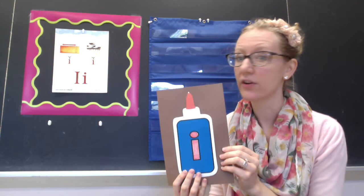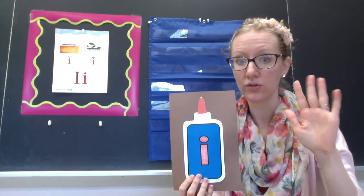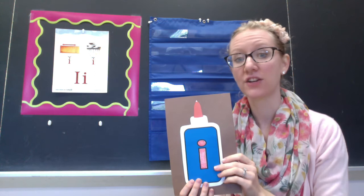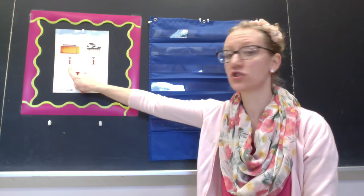I is one of our special letters because it's one of our vowels. Remember vowels stick letters together like glue. There are only five vowels in the alphabet: A, E, I, O and U. One of them is I. Vowels are also special because they have two sounds. A short vowel sound and a long vowel sound. Today we're going to be focusing on the short vowel sound for I.